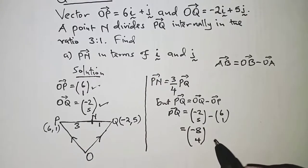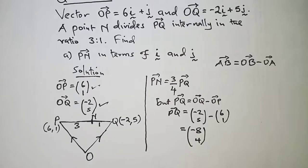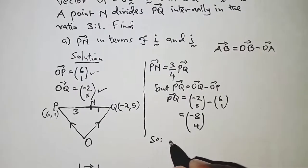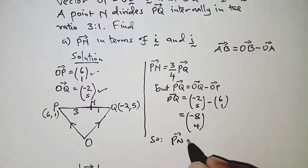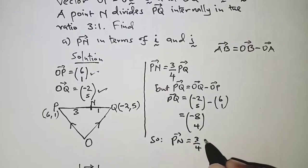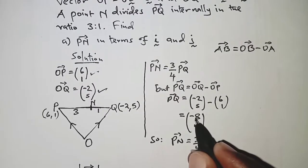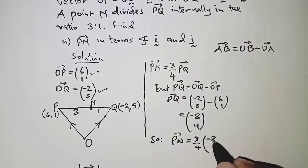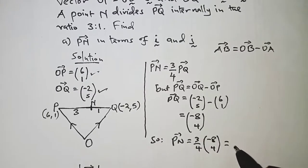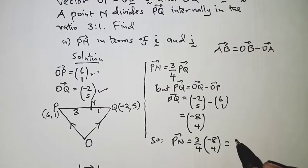So with that, we can now determine PN. So PN is 3 over 4 of PQ, but PQ we have right here, which is (-8, 4). So PN is 3 over 4, and that should give us (-6, 3).